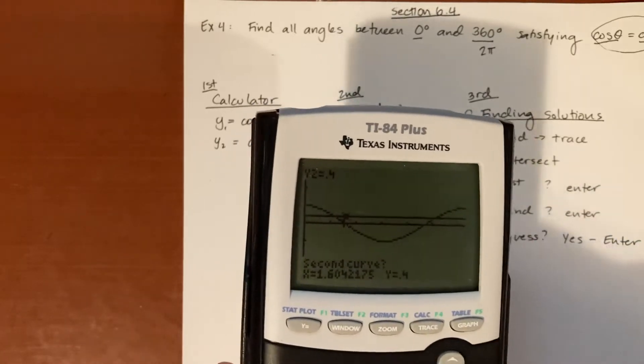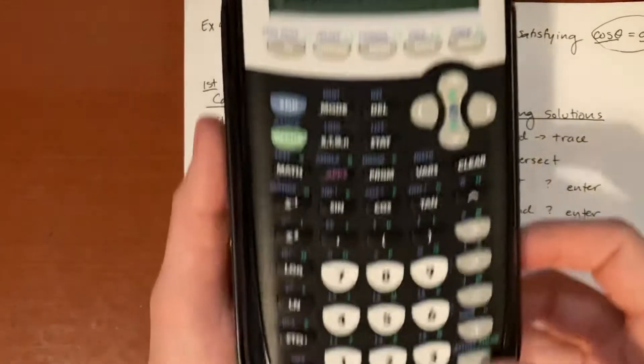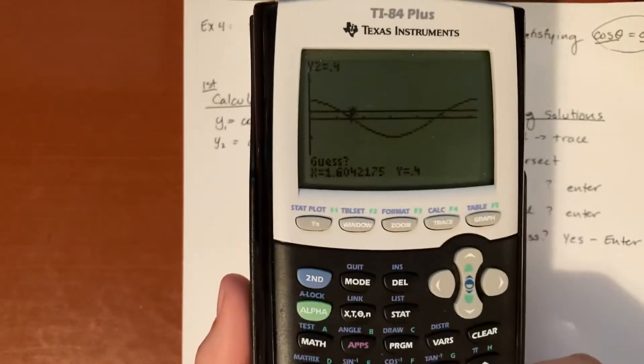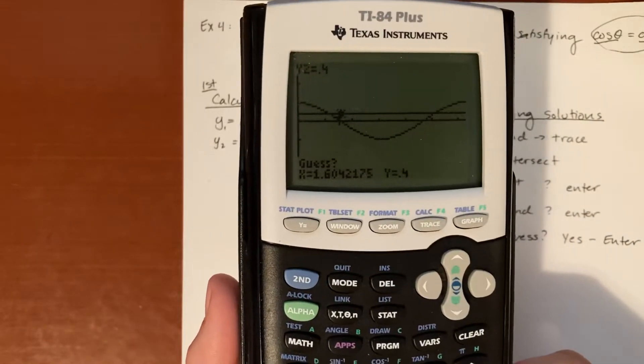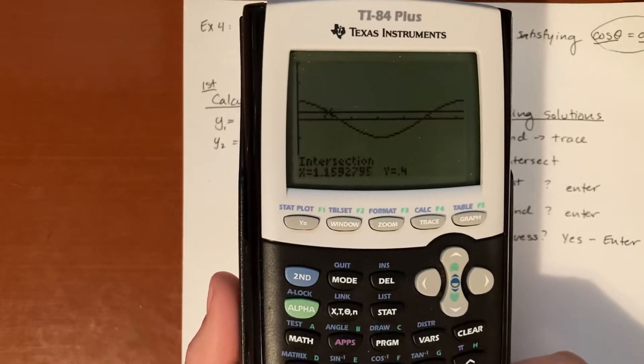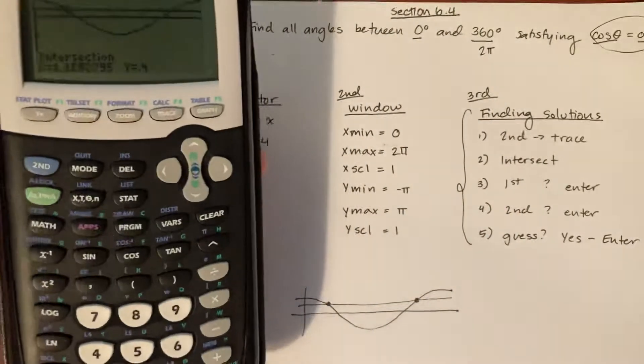And it's going to ask me, is that the second curve? That's what it's asking me right there. And I'm going to say yes, so hit enter. And then it's going to ask me, should I guess the intersection? And I'm going to say yes, enter.